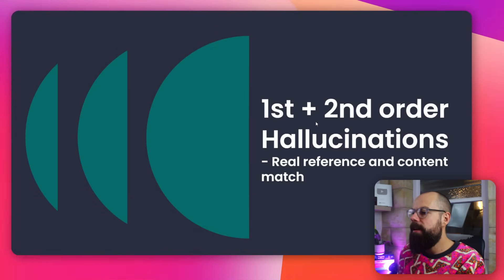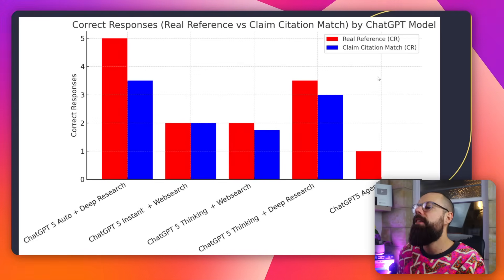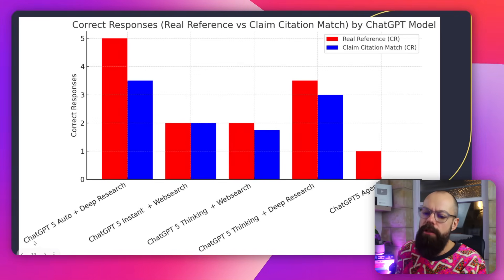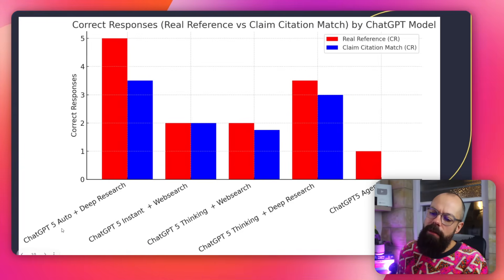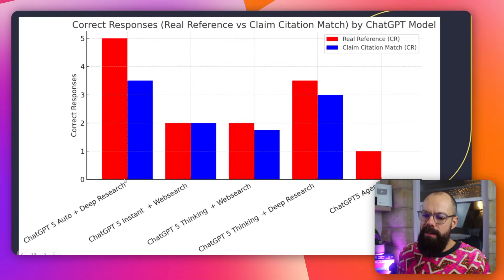Putting first and second order hallucinations together, here are the take-home messages: turn on deep research, use ChatGPT 5 Auto, and stay away from ChatGPT 5 Agent. A lot of general use case agents don't do very well. I'll be testing AI agents for other tools soon, so subscribe. I'm also rolling out this study to other large language models so you know which one performs best for academia and research. ChatGPT 5 Auto plus deep research — and deep research with Thinking — is what you should be using.